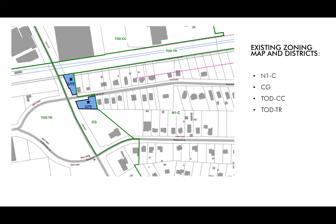Here's a current zoning district map in the City of Charlotte. As previously mentioned, the site is currently zoned CG, General Commercial. To the north and west, you have TOD-CC, which are community centers, as well as TOD-TR, which are transit transition districts. The majority of the area to the east of the site is currently zoned N1C. Our goal is to align with the zoning of the residential neighborhood.